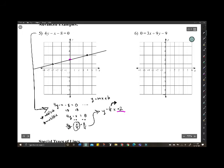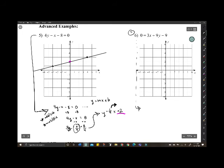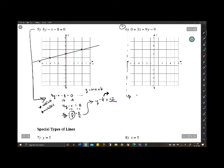Number 6. Try it out. Pause the video here. If you didn't pause, well, first, you want to add or subtract and get the 9y by itself. I'm going to add 9. So, 9 is equal to 3x plus 9y. Subtract 3x. So, negative 3x plus 9 equals 9y. And then, divide by 9.